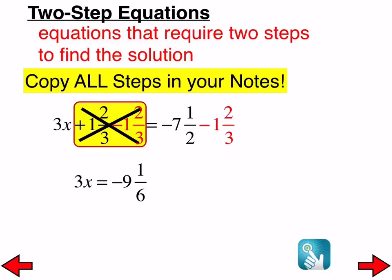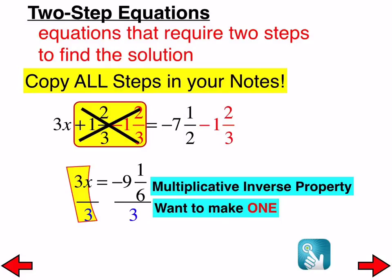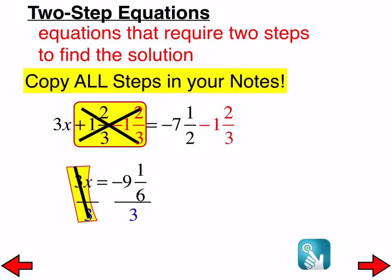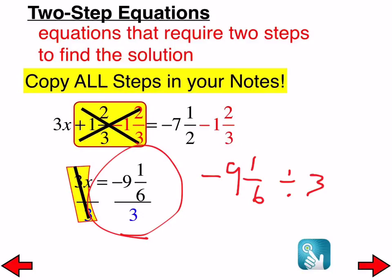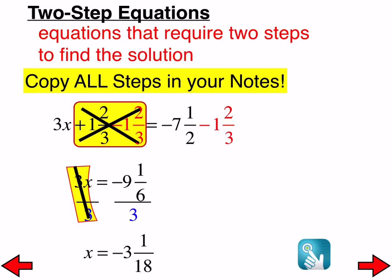So we have 3x equals negative 9 and 1 sixth. The inverse operation to multiplying by 3 is to divide by 3, so we divide both sides by 3 — we create the 1 there that we were trying to make. On the left-hand side we're left with x, and on the right-hand side we need to figure out what negative 9 and 1 sixth divided by 3 is. Remember, division with mixed numbers means you convert them first. We should end up with x equals negative 3 and 1/18. That's the solution, and if we check, we substitute it in and verify it is correct.